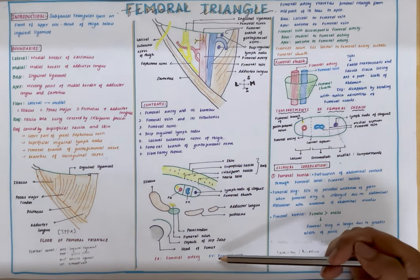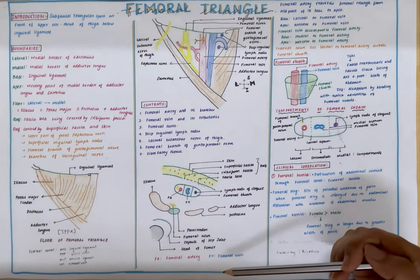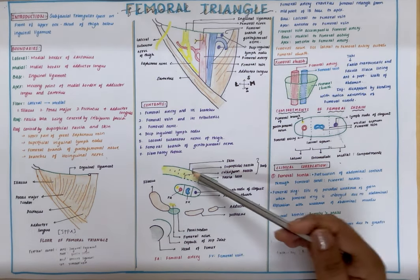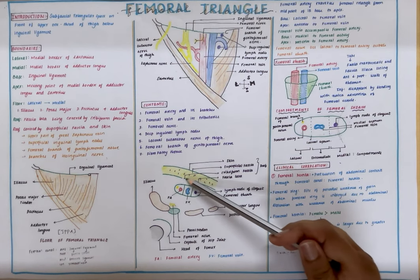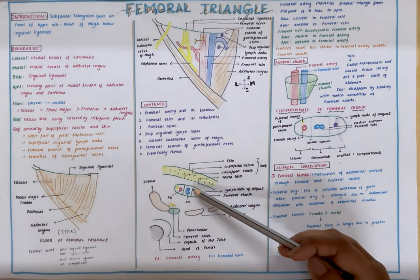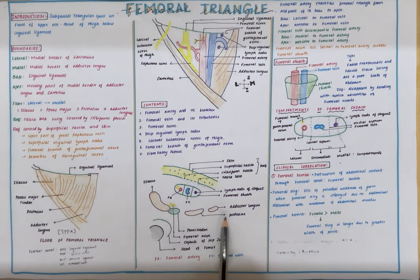Now in this picture, this is a cross section of the thigh at the level of femoral triangle. In this you can see the skin, superficial fascia, the fascia lata with the saphenous opening which is covered by the cribriform fascia, the contents of the femoral triangle, and the floor muscles - IPPA.